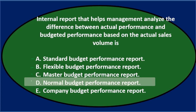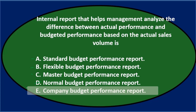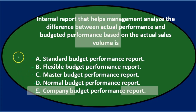D says the normal budget performance report — 'normal' is a fairly generic term, so maybe the master budget is what's considered normal. E says the company budget performance report, which also sounds too generic since a company could be organized differently. So we'll eliminate D and E as too generic and keep A, B, and C.